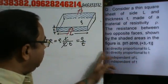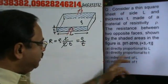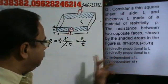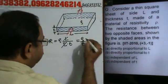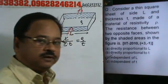So, checking the options: directly proportional to L, directly proportional to T, inversely proportional to T, independent of L, independent of T. What is independent of L? Therefore, the correct option is option C. Okay?